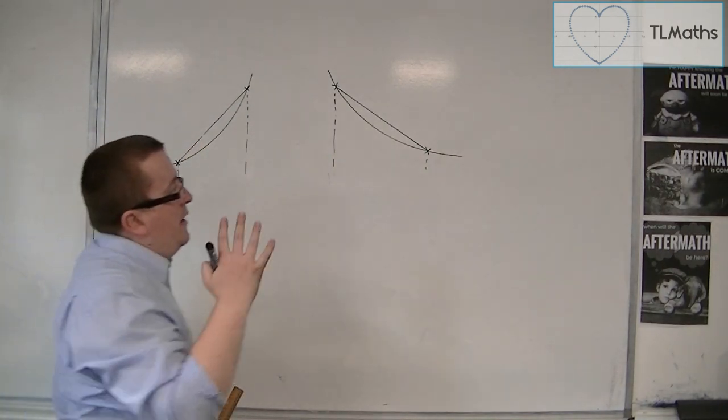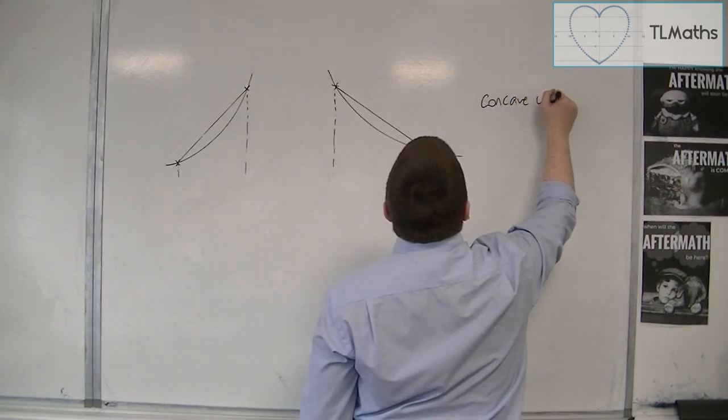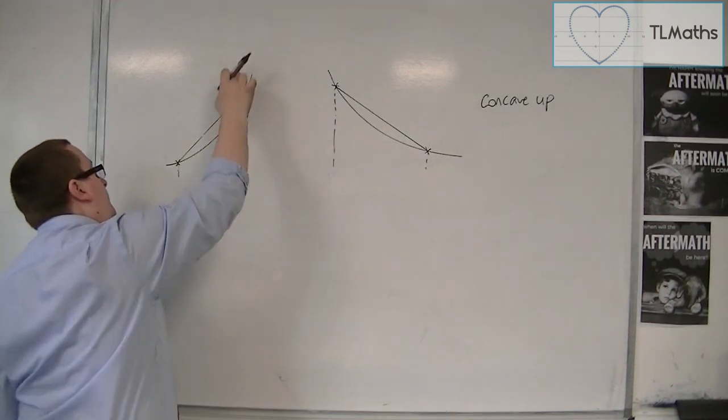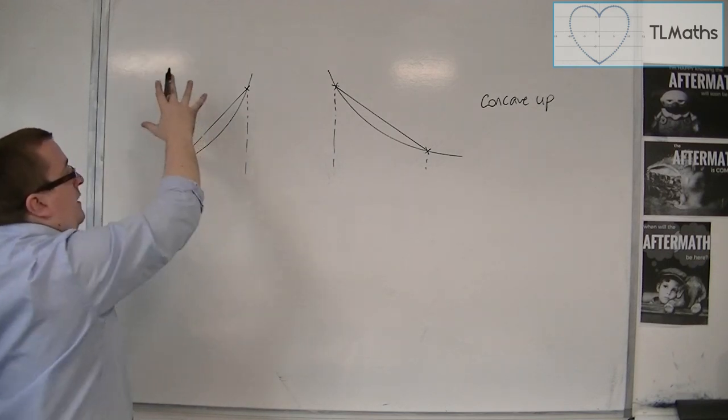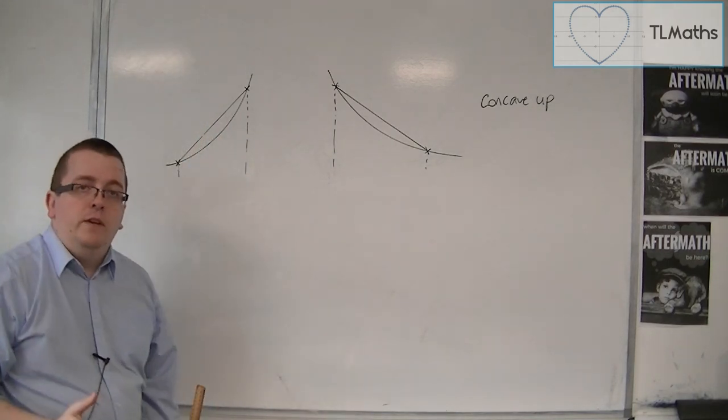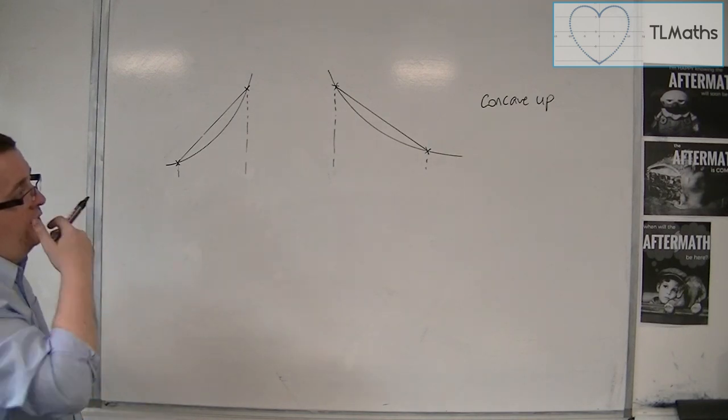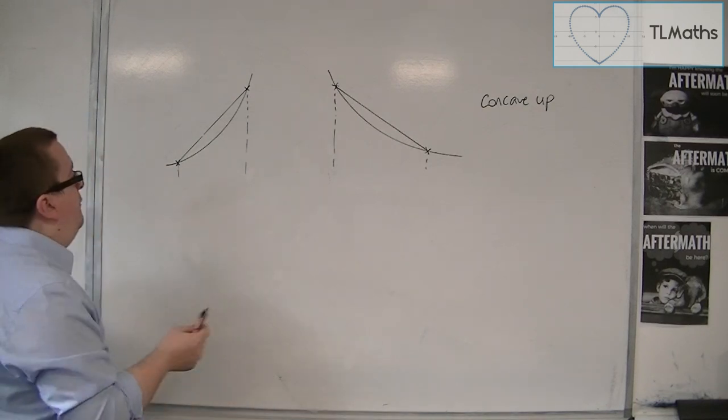Now, these cases are known as concave up because the concavity of the shape of the curve is pointing in an upwards direction. So that's why we would determine it as concave up. And in both these cases, you get overestimates.